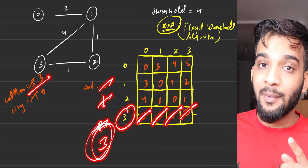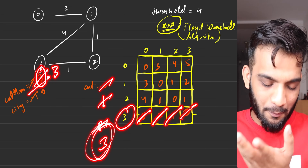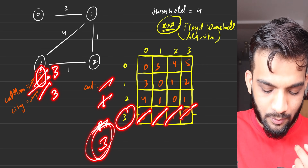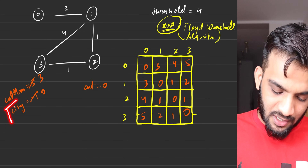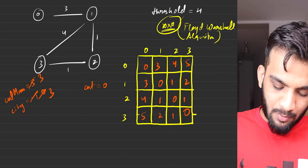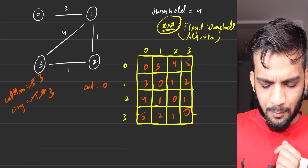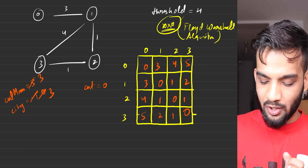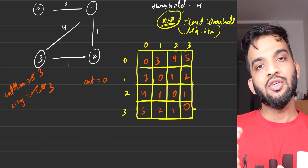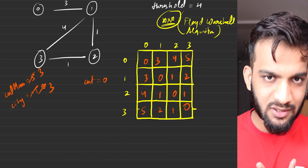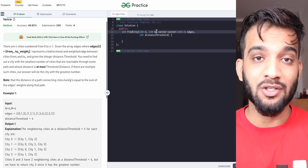For city 3: count is 3 — same as our current minimum. Since we want the largest city when there's a tie, we replace the city index with 3. At the end of iterating all cities, city 3 is our answer and that's what we return. Note: if the question asked how many cities, you'd subtract 1 since we count the city itself. But the question asks which city, so returning city 3 is correct.